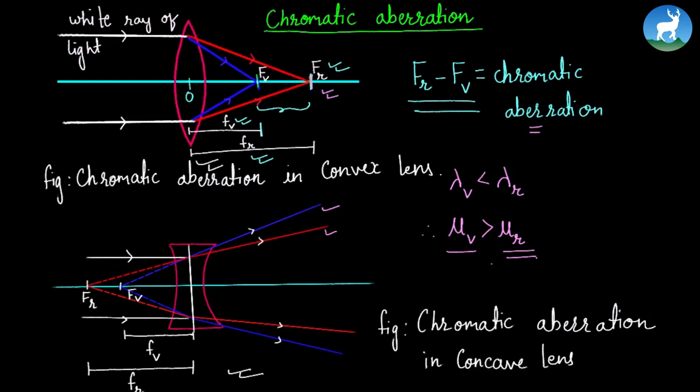In this case, violet color focuses at point Fv from the lens. If you look at Fr, red color focuses at point Fr from the lens.